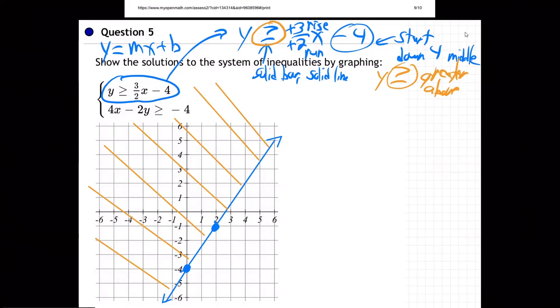Now, let's grab the second one. Now, the second one is going to be a lot more work. Grab this one, bring it over here. 4x minus 2y greater than or equal to negative 4. Now, the first thing is we have to get y alone. Remember that? This one does not have y alone. So we have to get y alone. So what are we going to do?